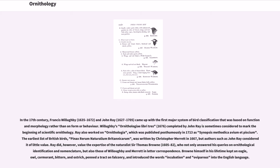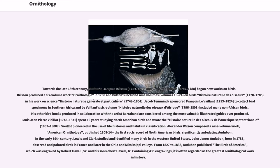Towards the late 18th century, Jean-Jacques Brisson and Comte de Buffon began new works on birds. Brisson produced a six-volume work on ornithology in 1760, and Buffon included nine volumes on birds in his Histoire Naturelle des Oiseaux. Jacob Temminck sponsored François Levaillant, 1753–1824, to collect bird specimens in southern Africa, and Levaillant's six-volume Histoire Naturelle des Oiseaux d'Afrique included many non-African birds. His other bird books produced in collaboration with the artist Barraband are considered among the most valuable illustrated guides ever produced. Louis-Jean Pierre Vieillot spent ten years studying North American birds and pioneered the use of life histories and habits in classification.